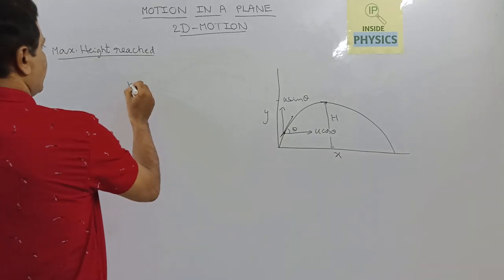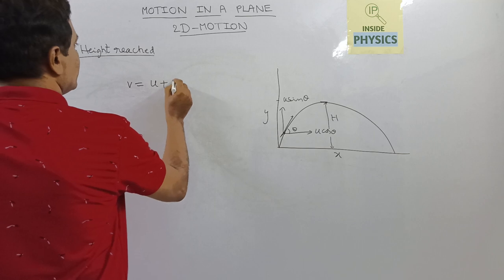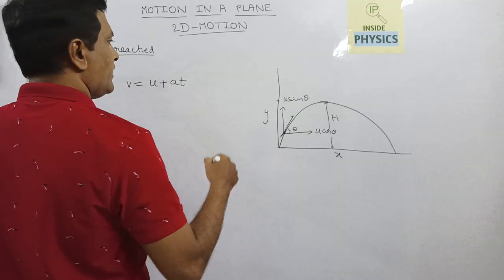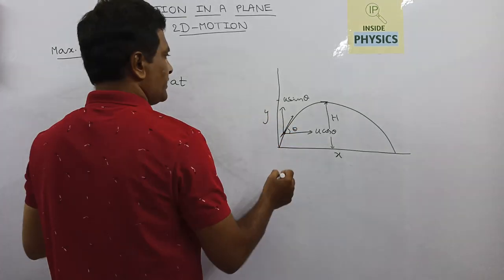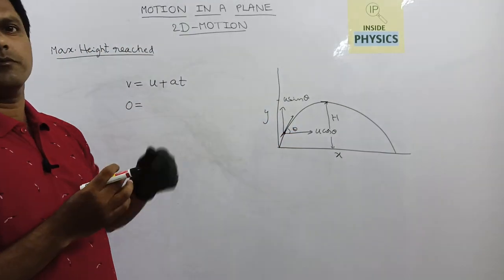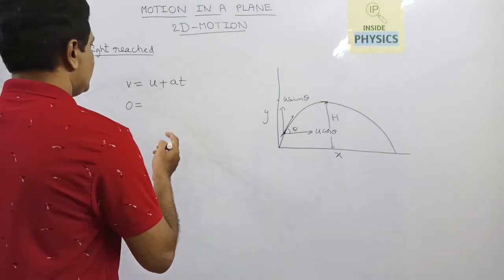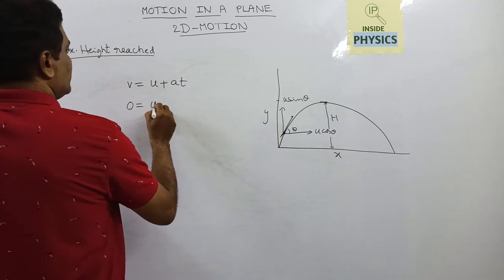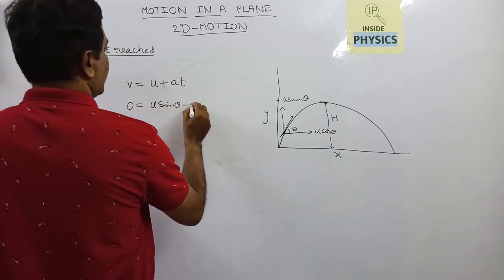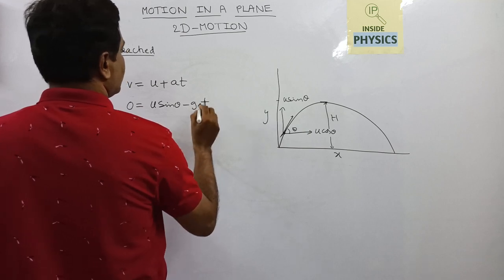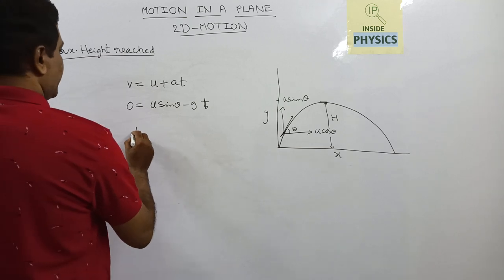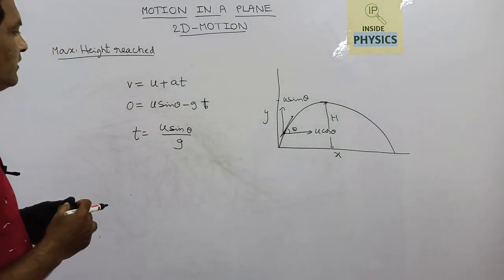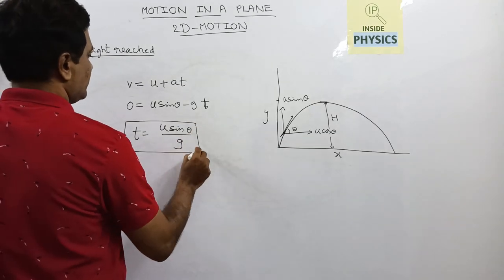To find the time of ascent, we use the equation of motion. At the highest point, the vertical component of velocity is zero. So we write 0 equals u sin theta minus g times t_ascent. Therefore, time of ascent equals u sin theta by g. This is the time of ascent for a projectile.